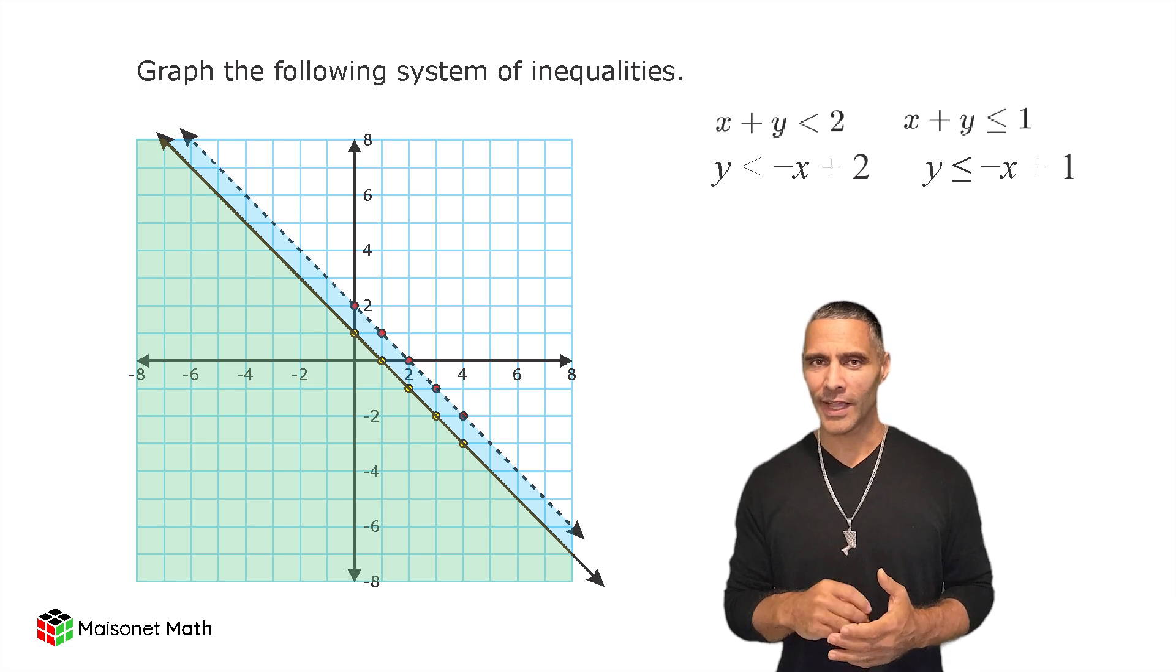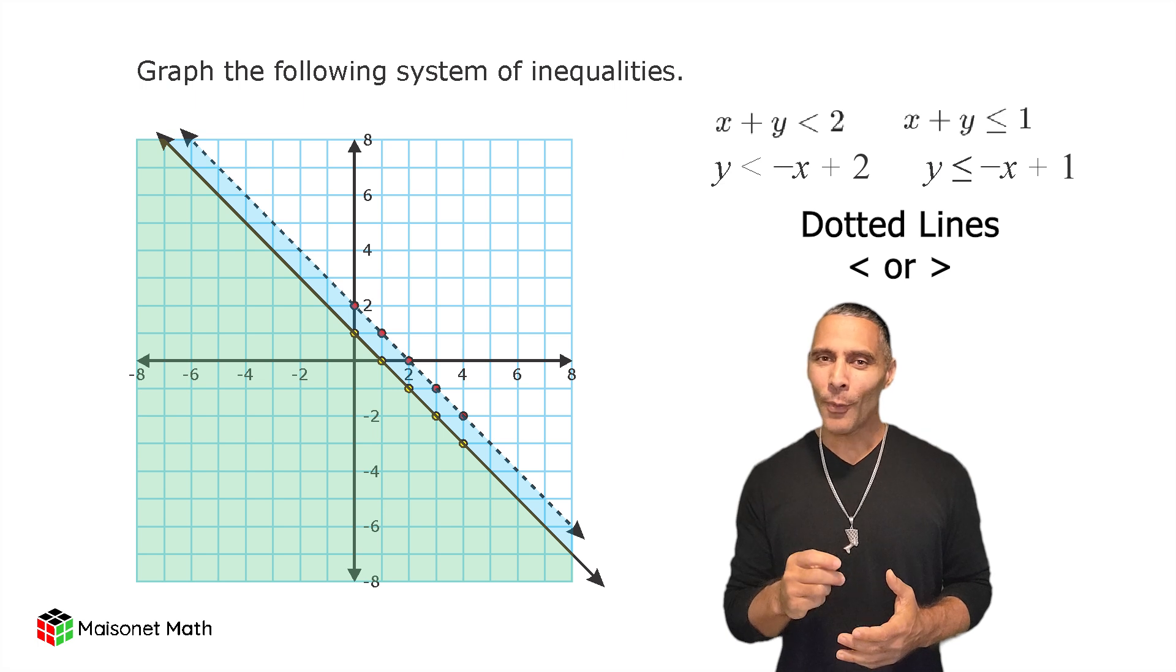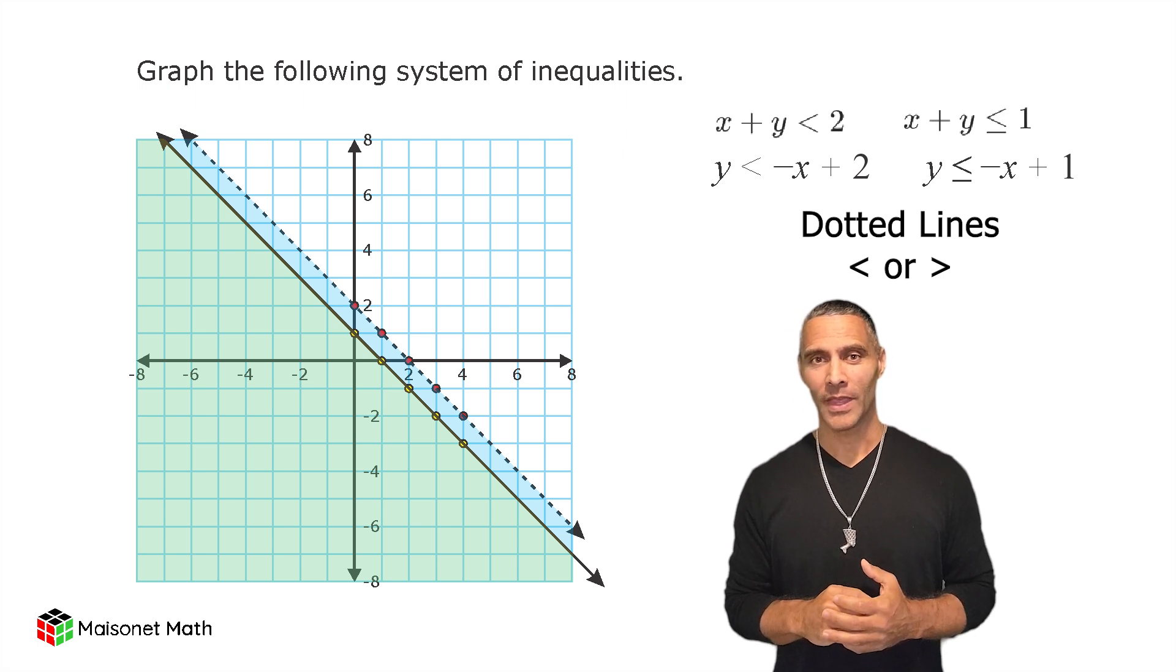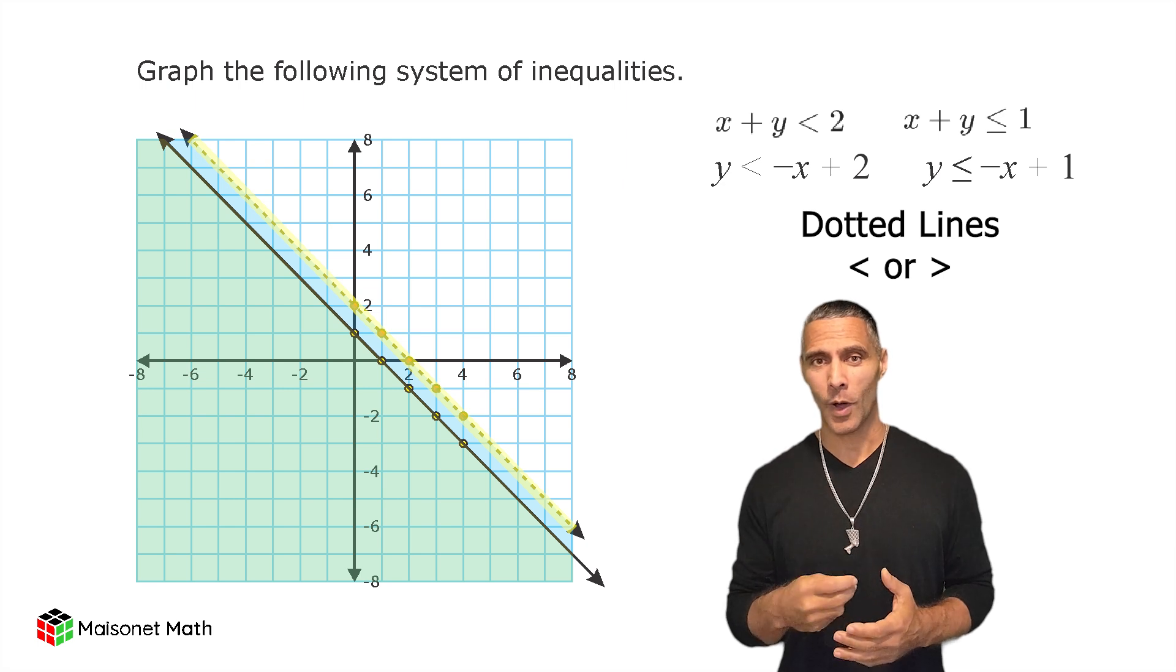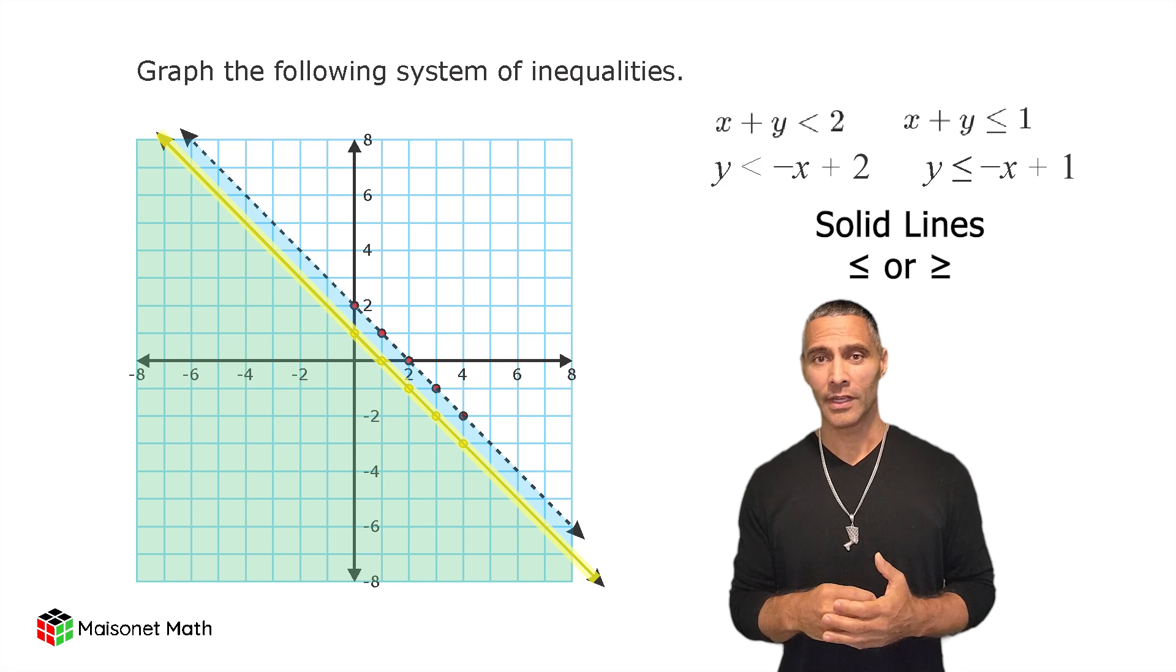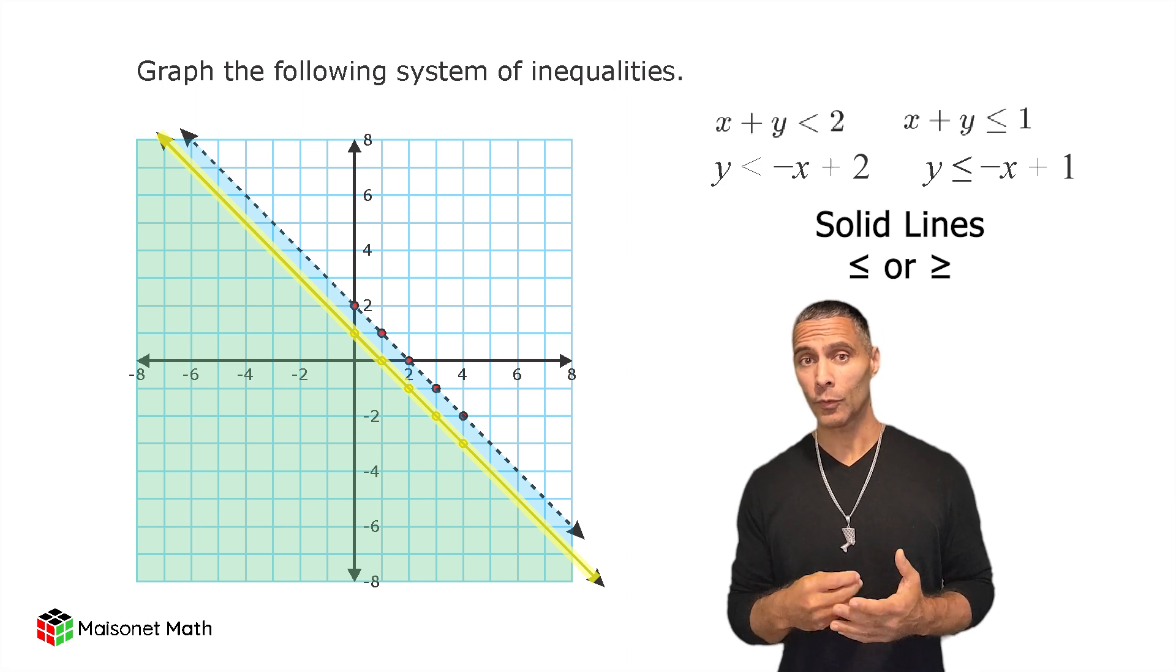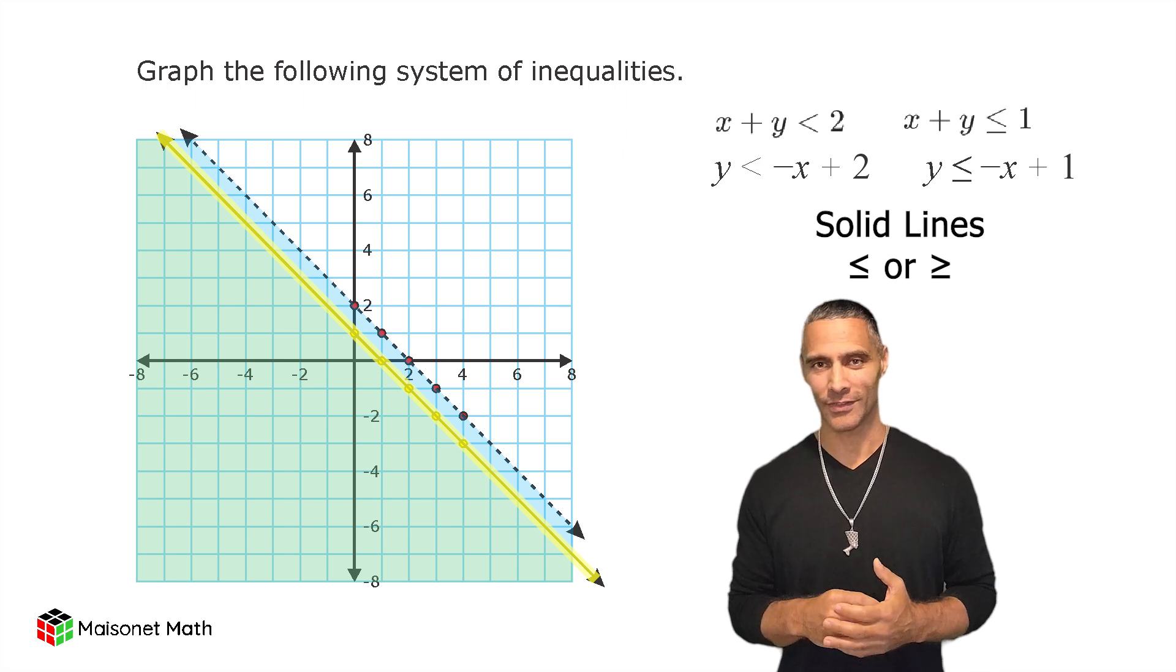Finally, remember dotted lines indicate strict inequalities, less than or greater than, meaning points on the line are not solutions. That is why we use a broken or dotted line to indicate a strict inequality. Solid lines indicate inclusive inequalities, less than or equal to or greater than or equal to, meaning points on the line can be solutions.